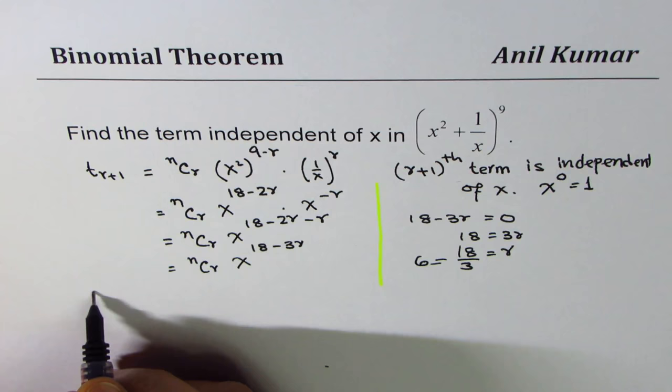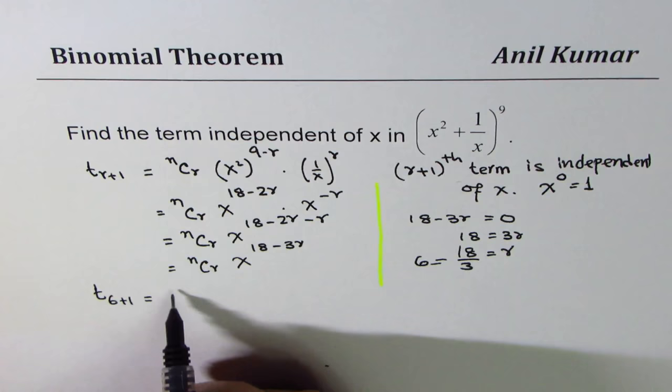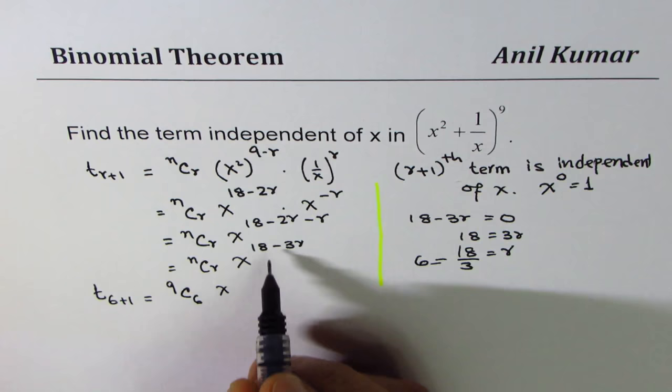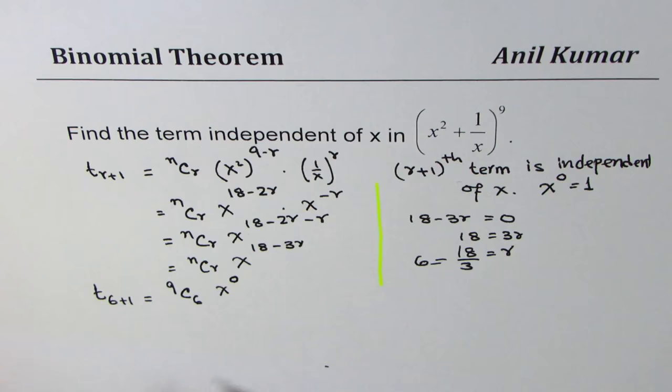So, let's put this r equals 6 in the term number. So, t6 plus 1 will be equal to n. n in our case is 9. I should have written 9 here. 9cr is 6. x to the power of 18 minus 3 times 6 gives us 0.